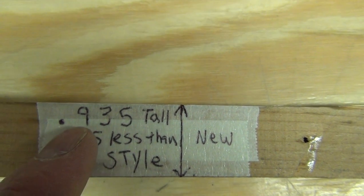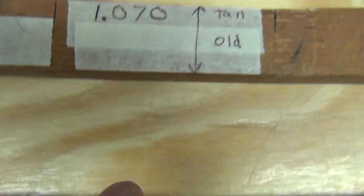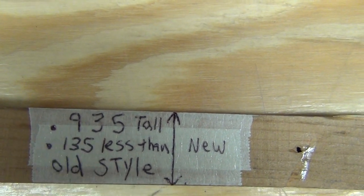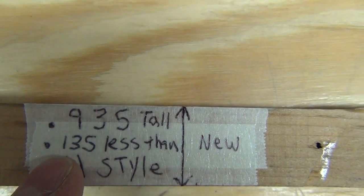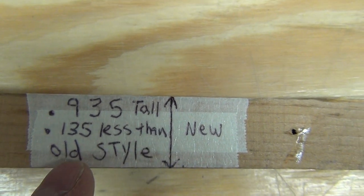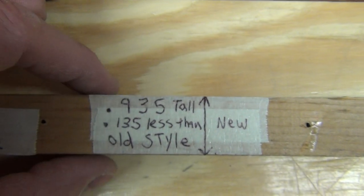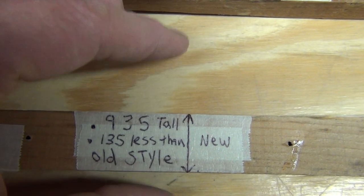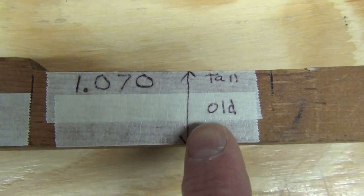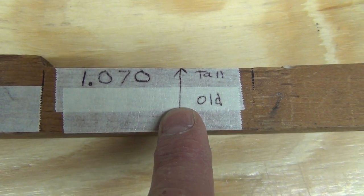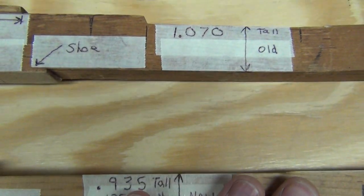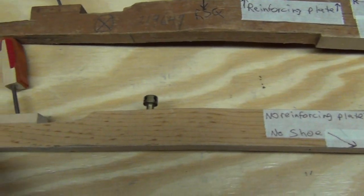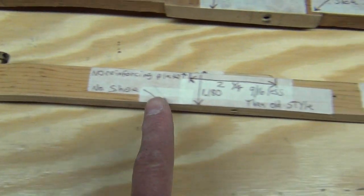The new style, they reduced that height from 1 inch and 70 thousandths to 935 thousandths. Basically, that's 135 thousandths less than the old style. Basically, this key stick itself is more than an eighth of an inch shorter than the original key. What that did was it made these keys very spongy and flexible because it's a very long key.